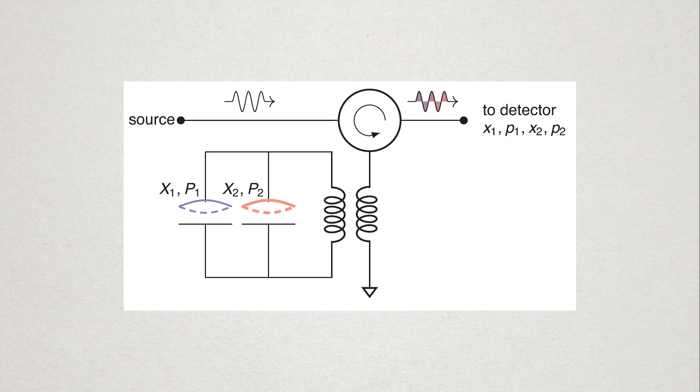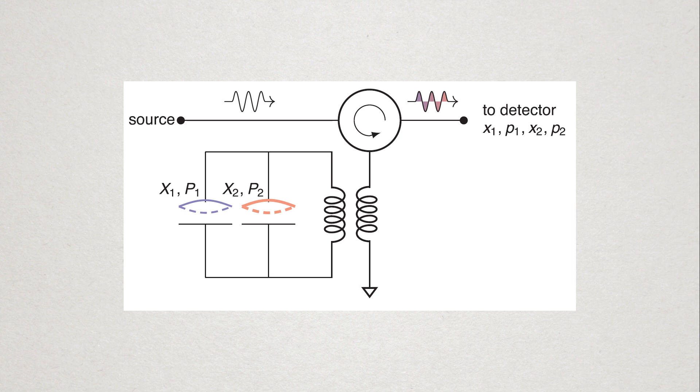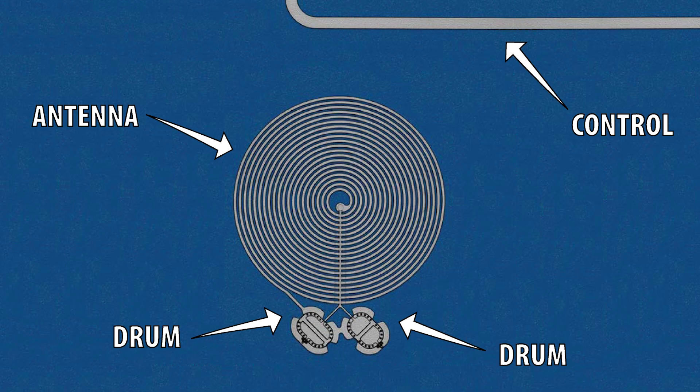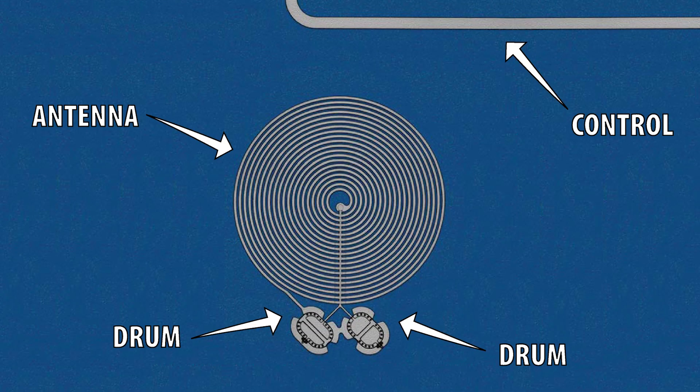Therefore, as the frequency of the drum beating changes, so does the resonance of the cavity. Then, to interact with the cavity, microwaves were applied along a nearby electrical line, which then couples into the spiral resonator. Scientists could use this microwave interaction to interact with the drums directly.